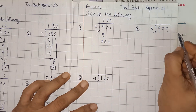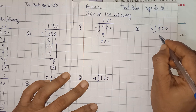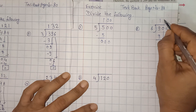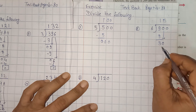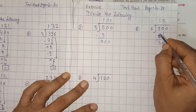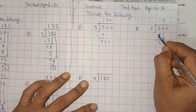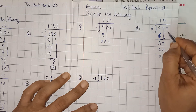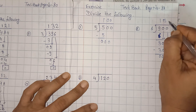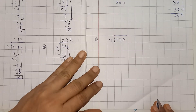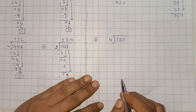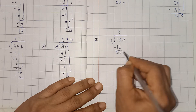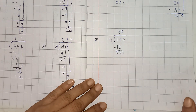Now, 900 divided by 6. 6 ones are 6. Here it is 3. Yeh 0 neeche le liya. 9 minus 6 yahan pe 3 bacha. 6 fives are 30. Minus 30 kar denge, bachcho. 0, 0. And yeh 0 neeche bhi aa jayega aur upar bhi aa jayega. Answer is 150. Now 120 divided by 4. 4 threes are 12. Yeh ho gaye 0, 0. Yeh 0 yahan pe bhi aega aur upar bhi aega. So answer is 30 and remainder is 0.